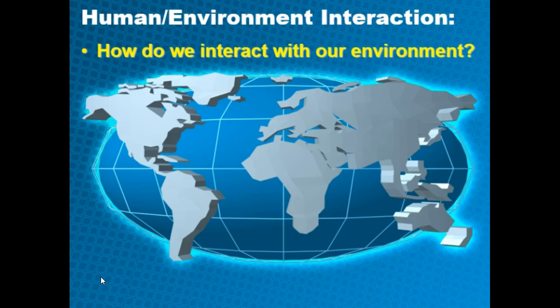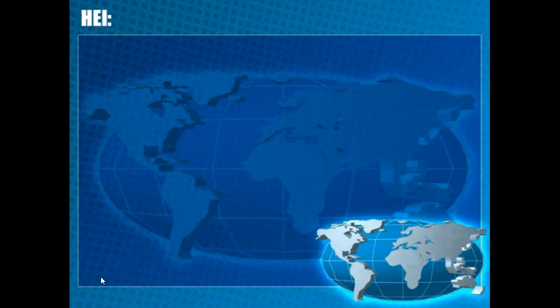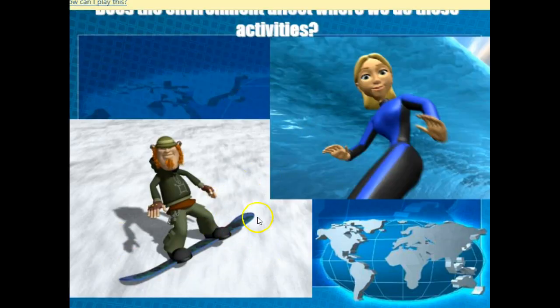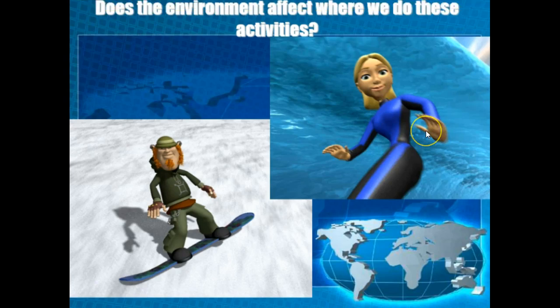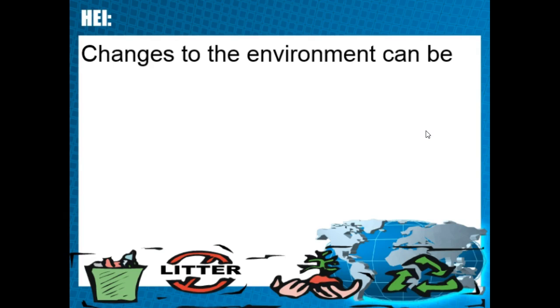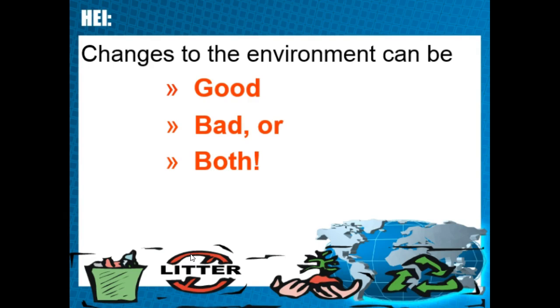Theme number five — the last one — is human environment interaction. The concept here is: how do we interact with our environment? How do we affect the environment, and how does the environment affect us? For example, if people live in a cold, snowy place, we've invented snowboards, snowmobiles, and tire chains to navigate it. That's the environment affecting us. On the flip side, we affect our environment through planting trees, recycling, or negatively through littering. Changes to the environment can be good, bad, or both, depending on your perspective.